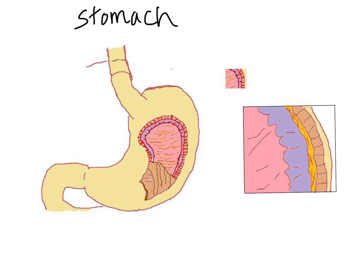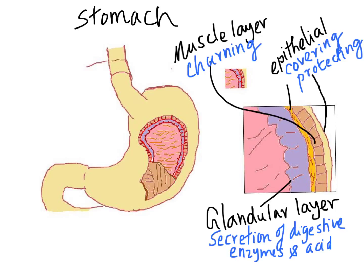Inside is the glandular layer — a layer of cells with a special function. The cells that make up this glandular tissue produce enzymes and other chemicals, including hydrochloric acid, which is secreted inside the stomach and makes chemical digestion possible. So the function of this tissue layer is to secrete digestive juices.